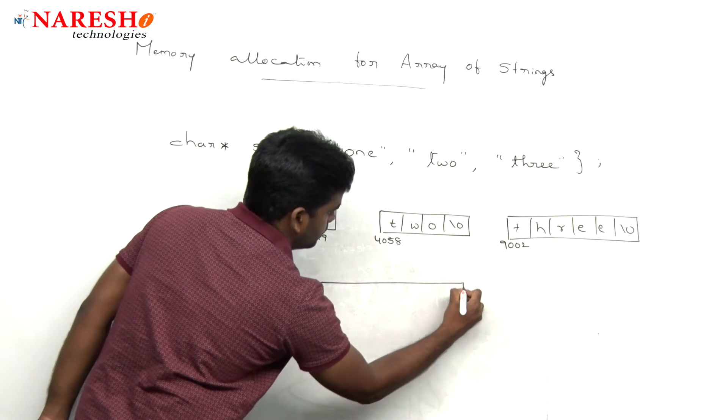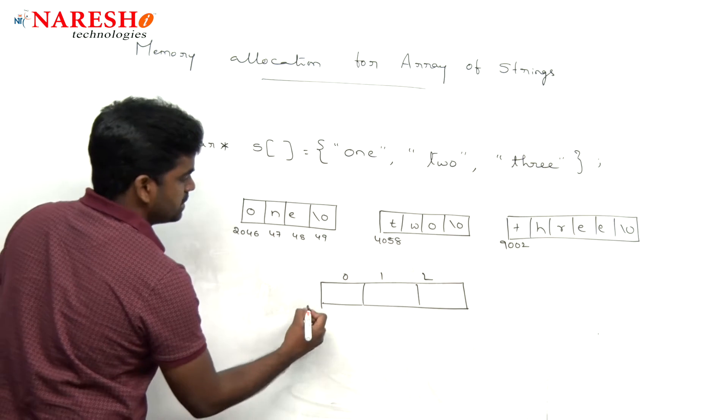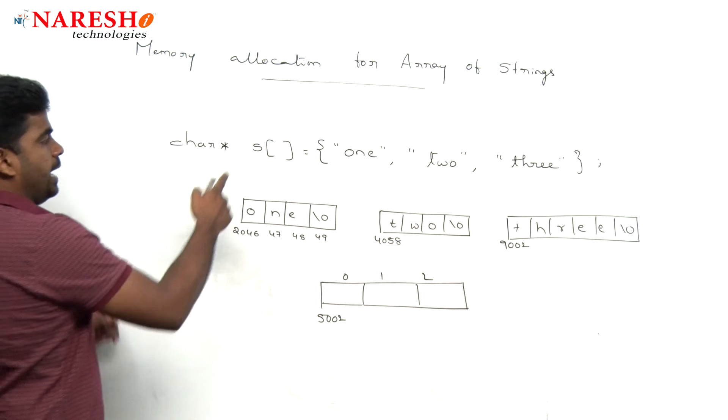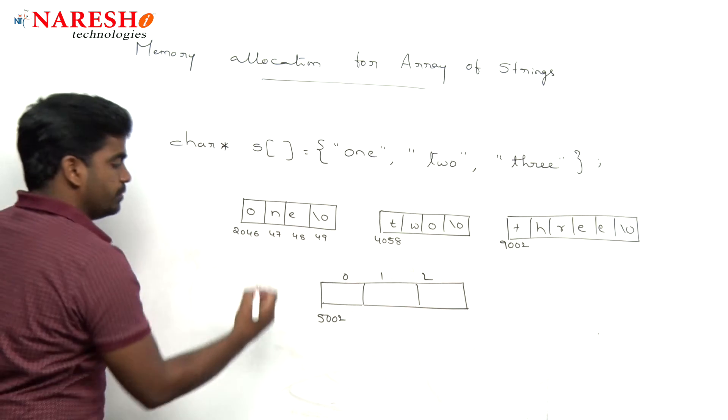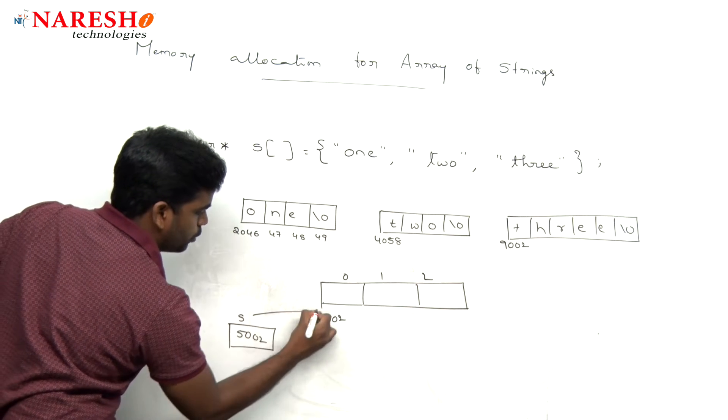So, automatically that size is 3: 0, 1, 2. It is having some base address like 5002. That 5002 array variable always stores the base address of that memory block. And here it is 5002 and it is pointing.